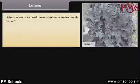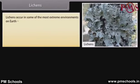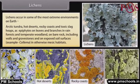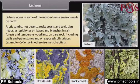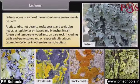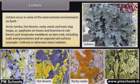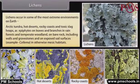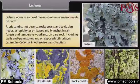Lichens occur in some of the most extreme environments on Earth — Arctic tundra, hot deserts, rocky coasts and toxic slag heaps — as epiphytes on leaves and branches in rain forests and temperate woodland, on bare rock including walls and gravestones, and on exposed soil surfaces in otherwise mesic habitats.